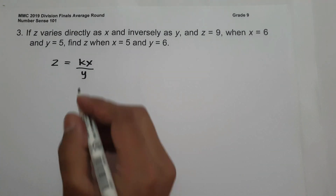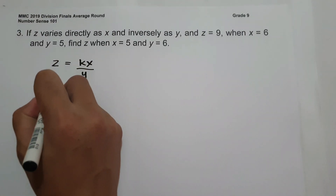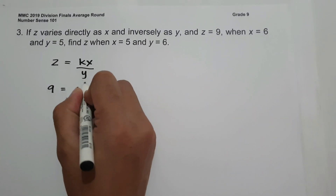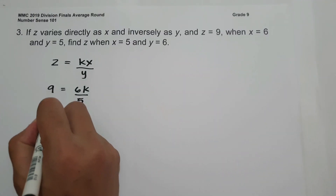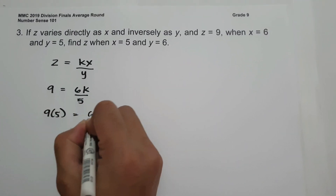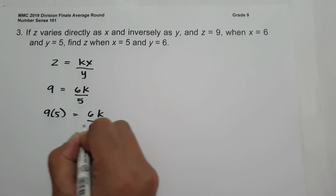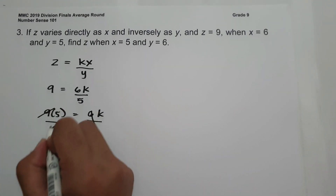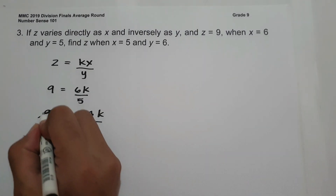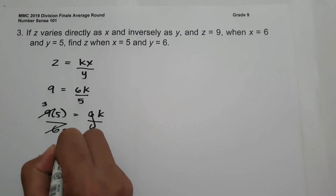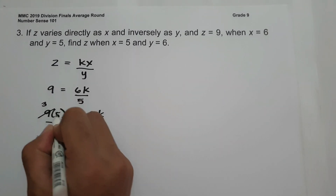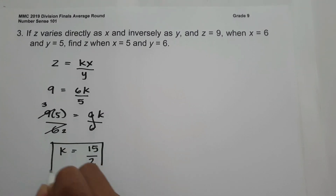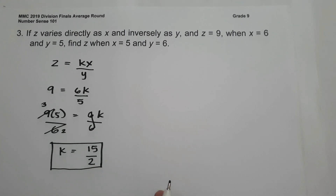Let us use the first set of given values to find the constant k. We have 9 equals 6k over 5. Multiplying both sides by 5 gives 45 equals 6k. Dividing both sides by 6, we can simplify: 9 and 6 are both divisible by 3, so 9 becomes 3 and 6 becomes 2. Therefore k equals 15 over 2. This is the value of the constant.